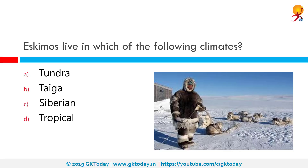Eskimos live in which of the following climates? The correct answer is the tundra climate. Eskimos or Inuit people have lived in the arctic region — the tundra — where the climate is cold and too severe for trees to grow, for over a thousand years. They have in fact adapted biologically to their environment via adaptation to foods.